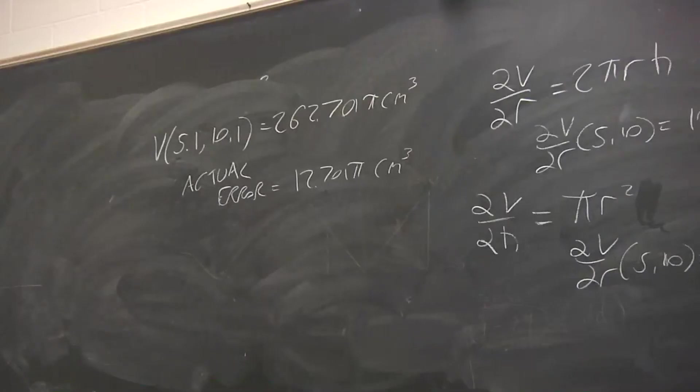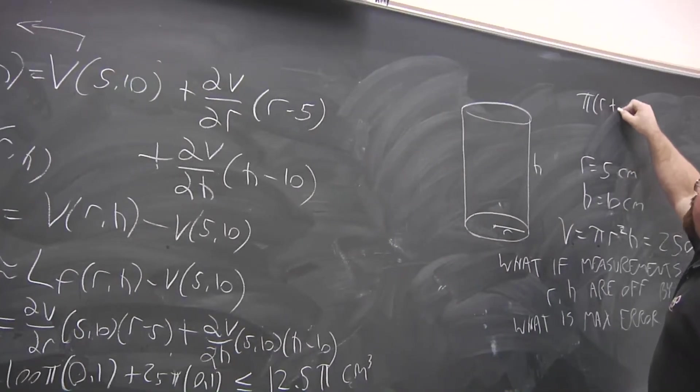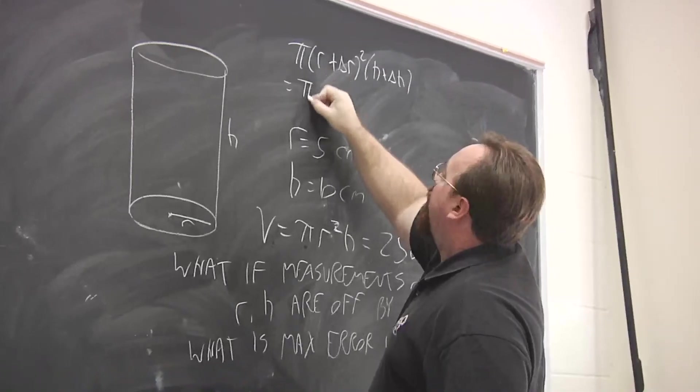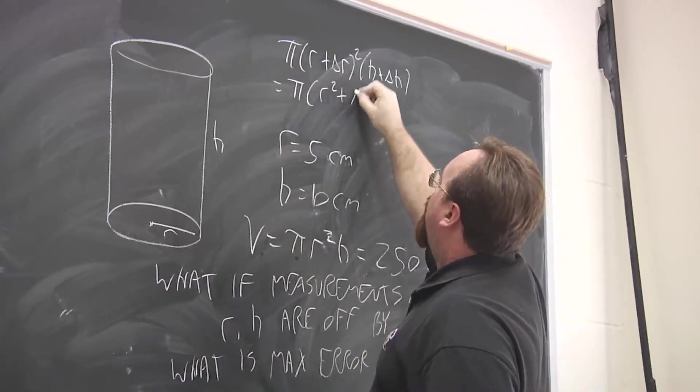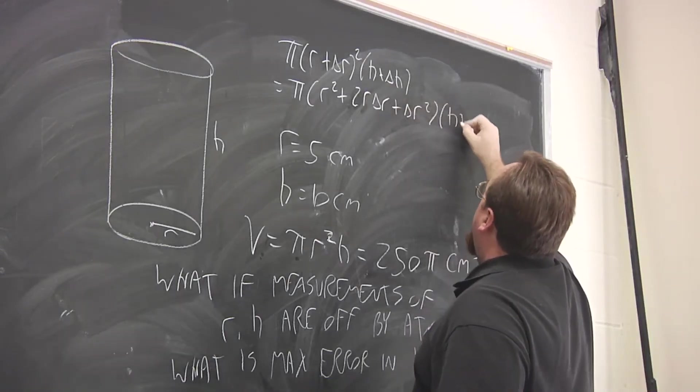So if we take a closer look at this, look at π(r + Δr)²(h + Δh). If we were to expand that out, we get (r² + 2rΔr + Δr²)(h + Δh).